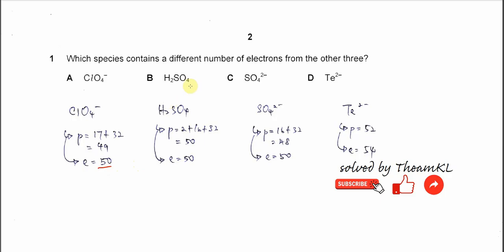For H2SO4, the proton number is 2 plus 16 plus 32, so it's 50. Because it's neutral, the electron number is the same as the proton number, so it's 50. So A and B are not the answer.